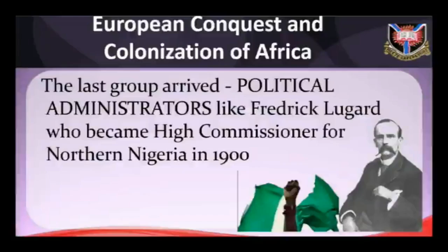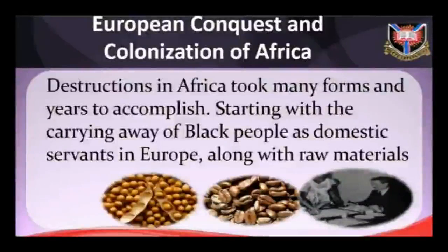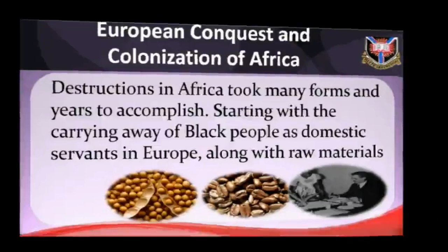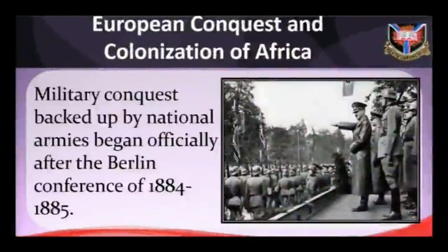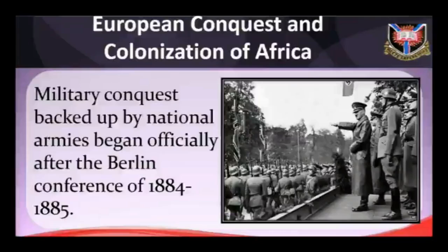The destruction of Africa took many forms over many years, starting with the carrying away of black people as domestic servants in Europe along with raw materials. Slavery began about 1450 and lasted over 400 years, resulting in the dispersal of millions of Africans to over 50 countries of the world where they live today as permanent evidence of white barbarism against Africans. Military conquest backed by national armies began officially after the Berlin Conference of 1884–1885. War, murder, arson, alcohol, and venereal diseases were joined to devastate Africa.